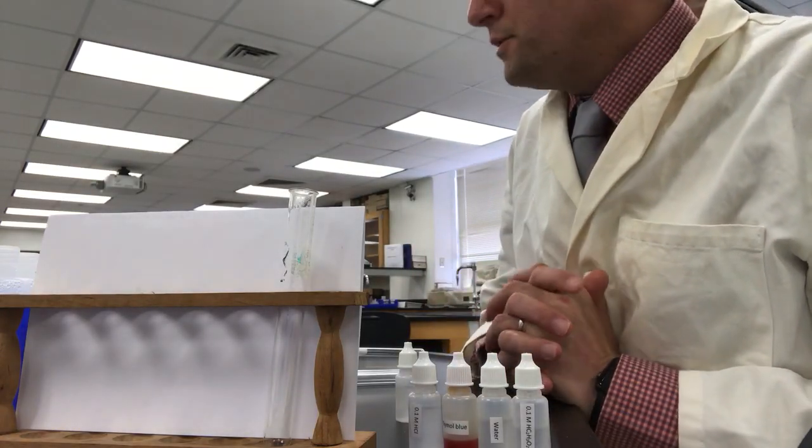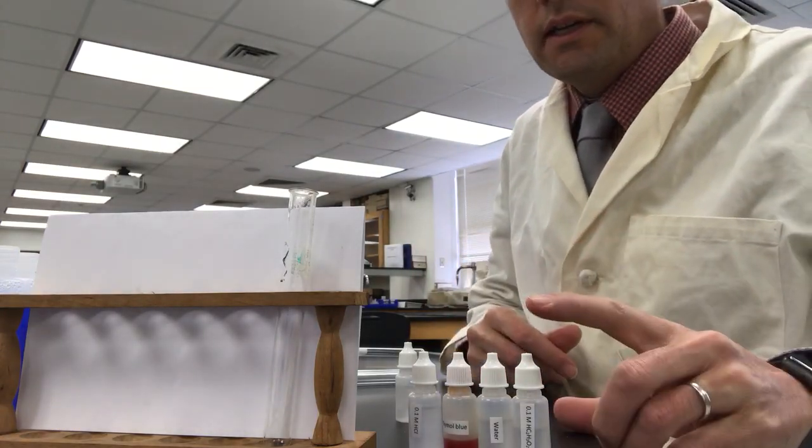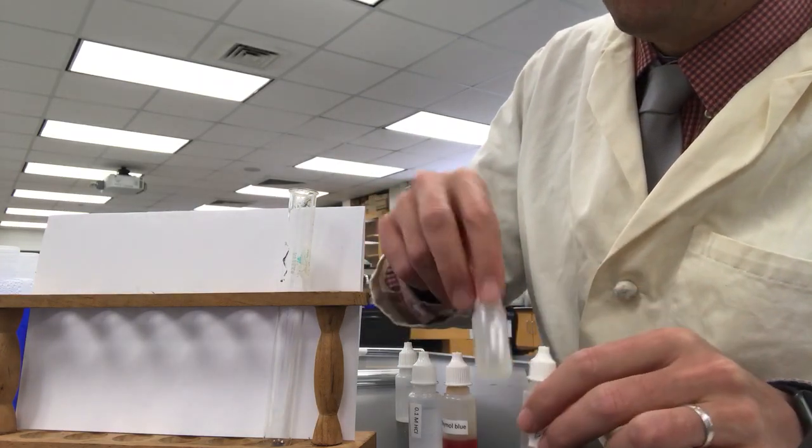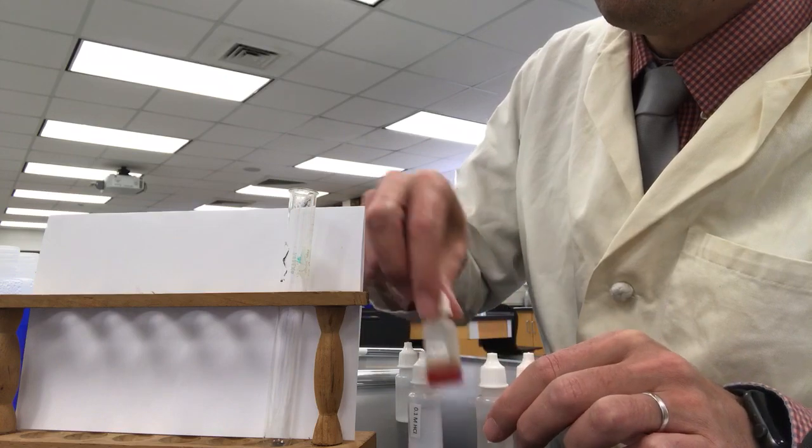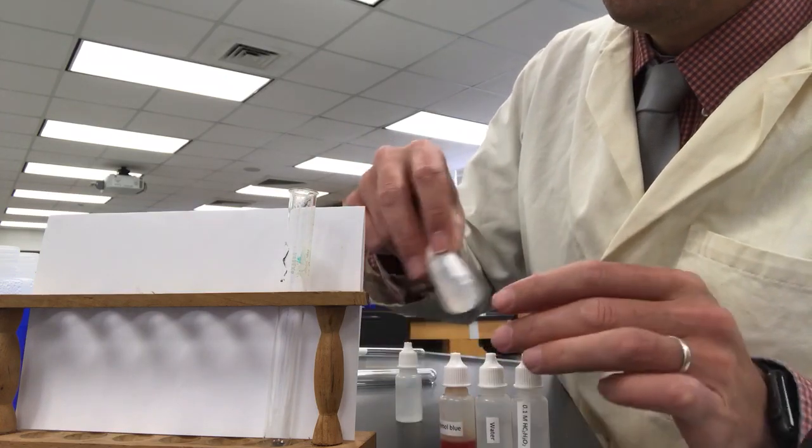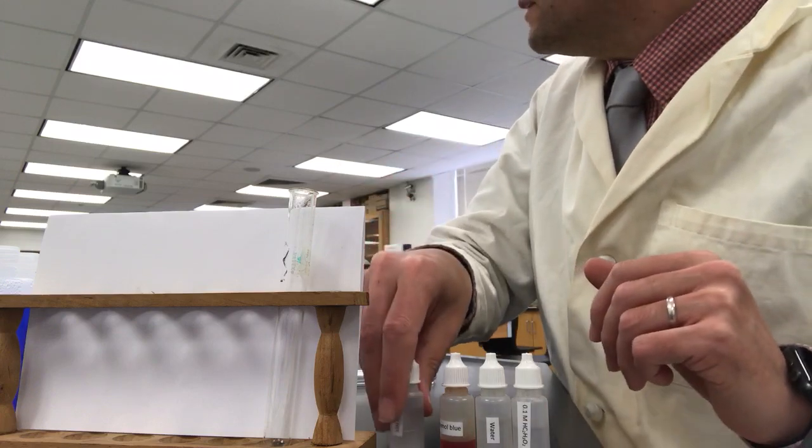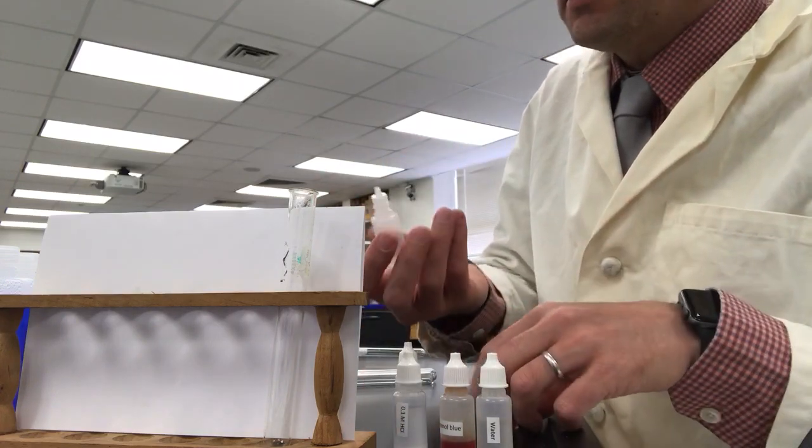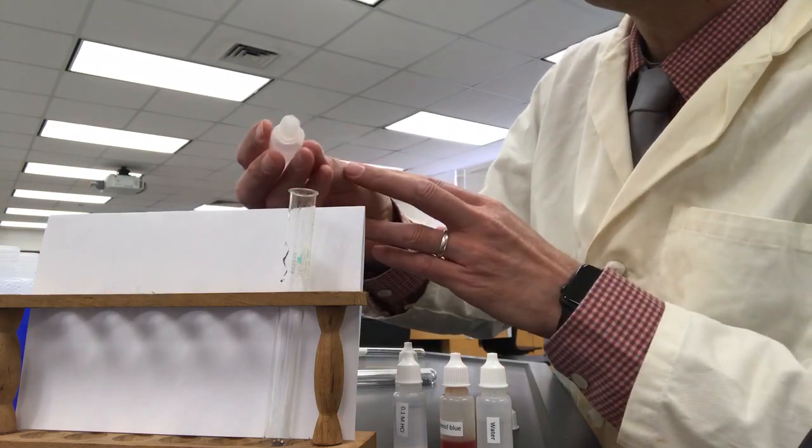This is solution B2 located in table 3. We're going to add 10 drops of acetic acid, 10 drops of water, one of thymol blue indicator, and we're going to add hydrochloric acid until there's no additional color change and we'll look at the colors in between.